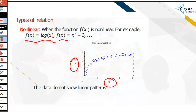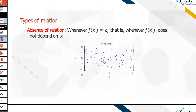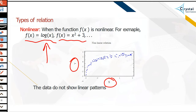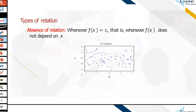In economics, most models are built based on the logarithmic value of a given variable. We can also be in a situation of absence of relation — where by eye, and even by statistical tests, we conclude that there is no relationship between variables X and Y.